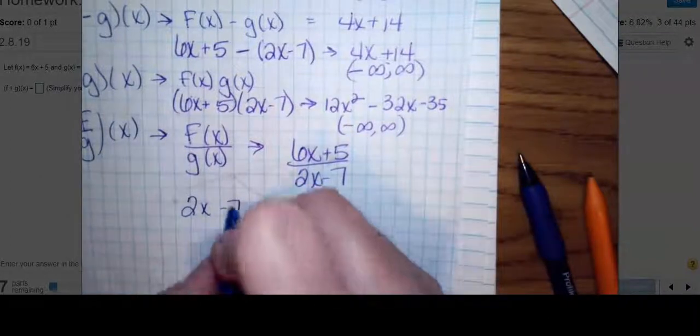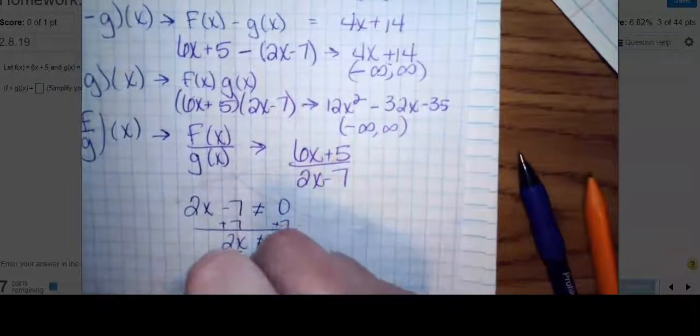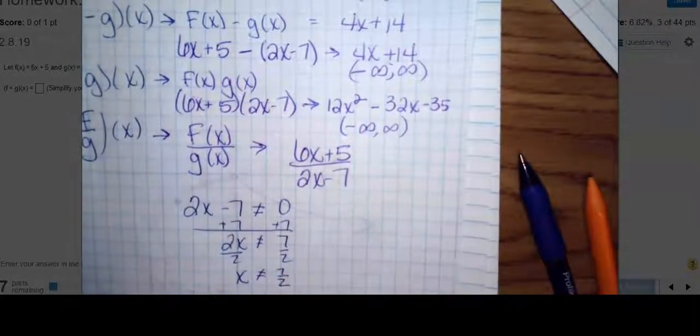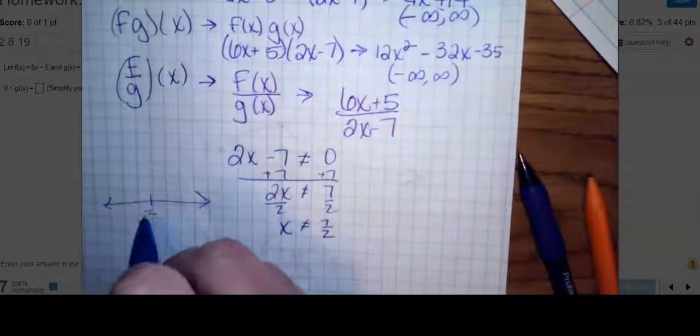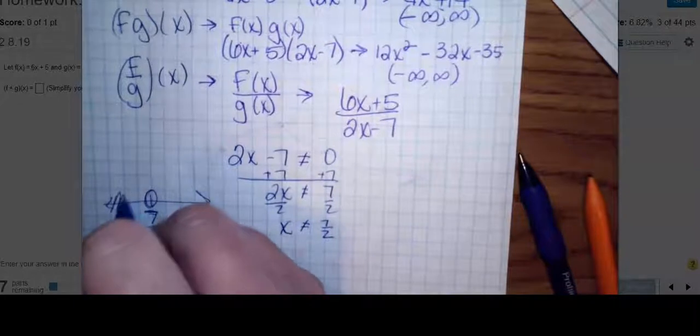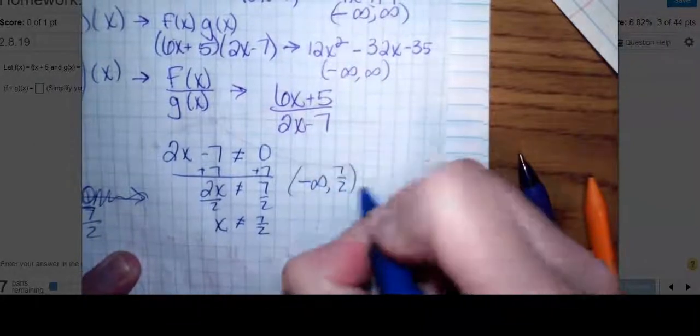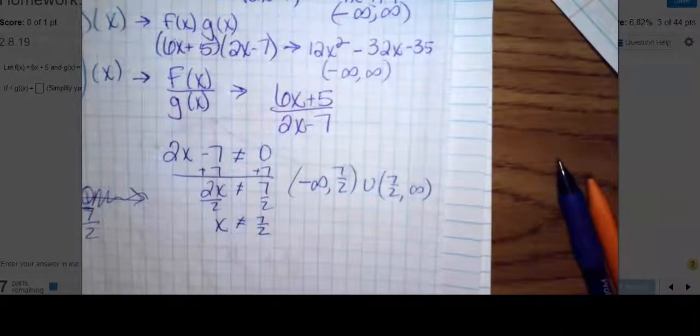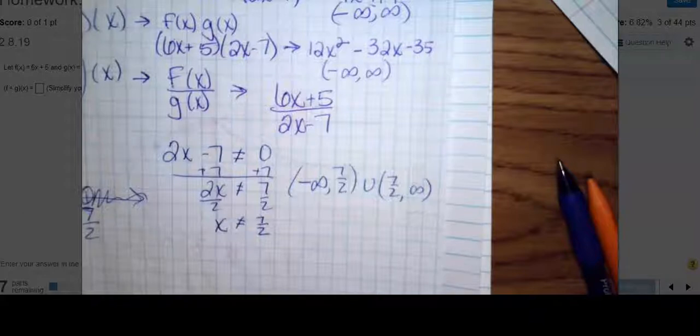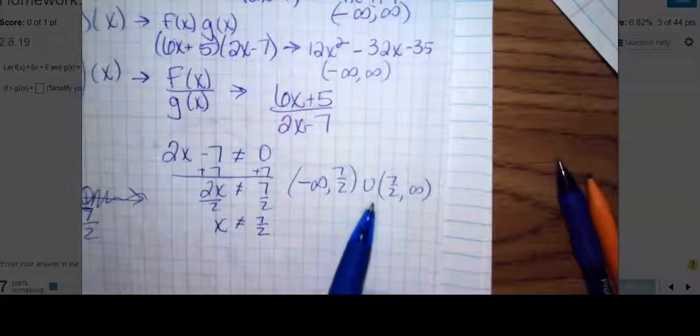I'm going to add 7 to both sides. 2x cannot be 7. Divide both sides by 2. x cannot be 7/2. x can be everything else. So that's an open circle. We're going to go this way and this way. What is your domain? From negative infinity to 7/2, and then again from 7/2 to positive infinity. That means you're allowed to use every single number except 7/2.